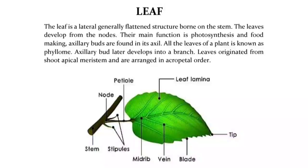The leaf is a lateral, generally flattened structure borne on the stem. Leaves develop from the nodes. Their main function is photosynthesis and food-making. Axillary buds are found in the axil of the leaf, and axillary buds later develop into a branch. All the leaves of a plant together are known as phyllome. Leaves originate from the shoot apical meristem and are arranged in acropetal order.